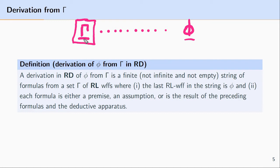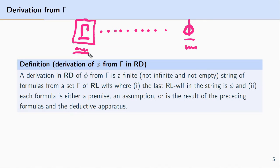Gamma might contain five, six, or seven formulas. The formulas of gamma are sometimes referred to as premises of the argument. So we're reasoning from these premises found in gamma to the formula phi, which is the conclusion. The derivation begins with gamma and terminates with phi.